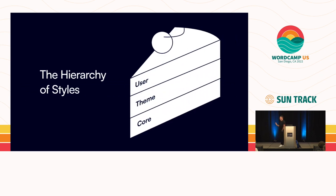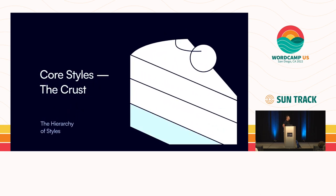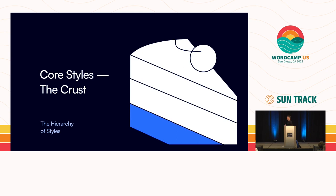If you like pie or cake, you'll like this illustration. These three styles layer on top of each other to form the site styling. The first is the crust, or the core styles — this is everything that core Gutenberg provides out of the box: how your buttons are displayed, the typography, the font sizes, the font spacing, everything you see out of the box without a theme layer in the editor.